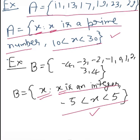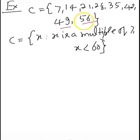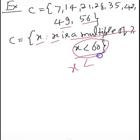Let's take another example. Set C has elements 7, 14, 21, 28, 35, 42, 49, and 56. Clearly these are all multiples of 7. So we write C = {x : x is a multiple of 7 and x < 57}, since the largest element is 56. This condition captures all the required elements.